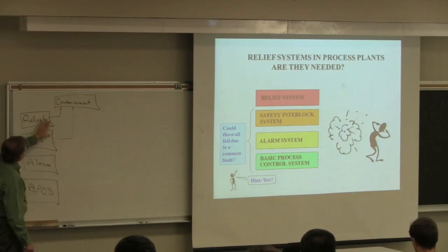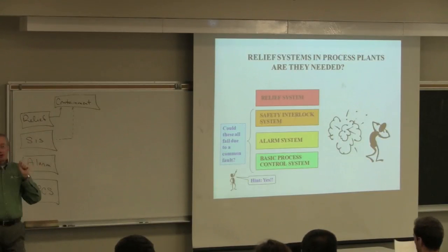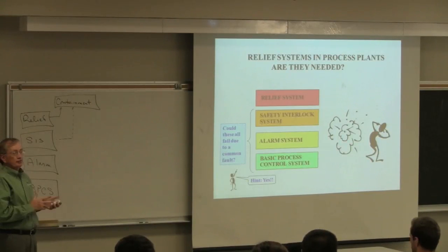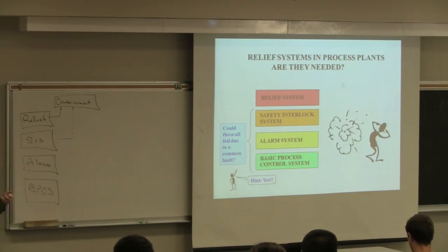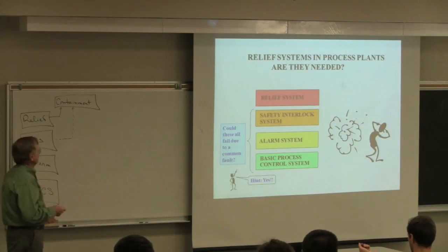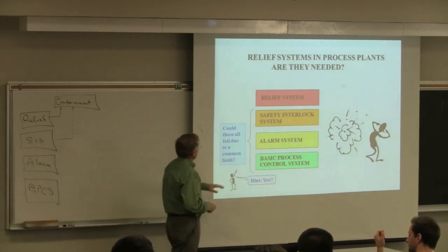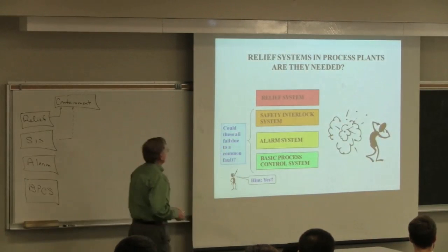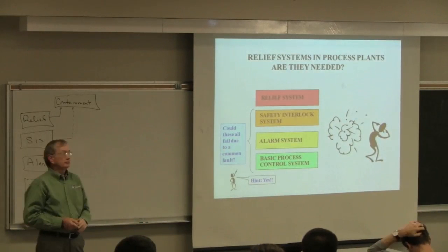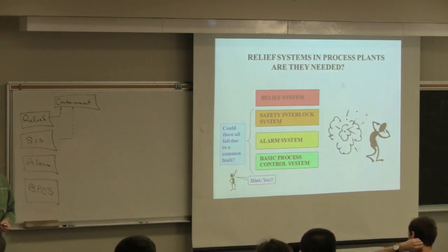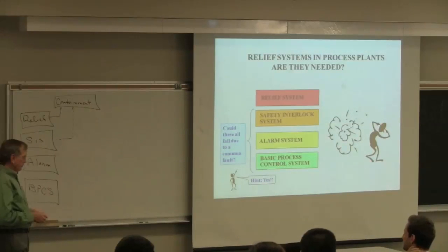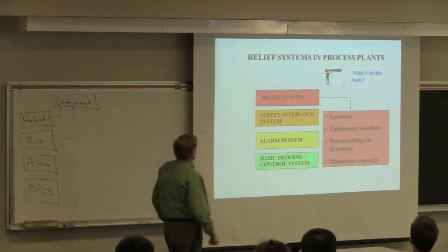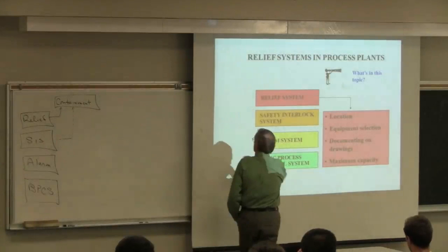The relief and the SIS, when they take action, will generally divert the material being processed somewhere else. These three levels of the hierarchy require electrical power, so if electrical power fails, we're in trouble. We're going to talk about the relief system and then go on to containment.